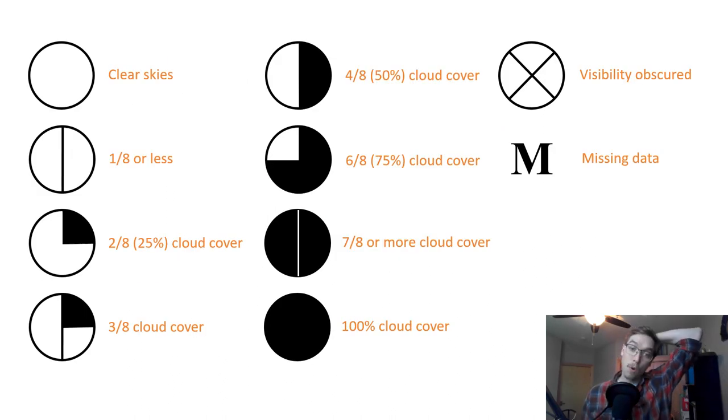So here for our cloud cover or sky conditions, we start at clear skies: empty circle. A circle that's bisected in the middle, that's one eighth percent cloud cover or less. And then from there it goes: a quarter of it's covered in, that's 25% cloud cover; a quarter of it's covered in with that bisecting line, that's three eighths; 50%, six eighths; a fully black circle with a white line going down, that means seven eighths; and then 100% cloud cover. Or visibility obscured, we see in the top right, or missing data.